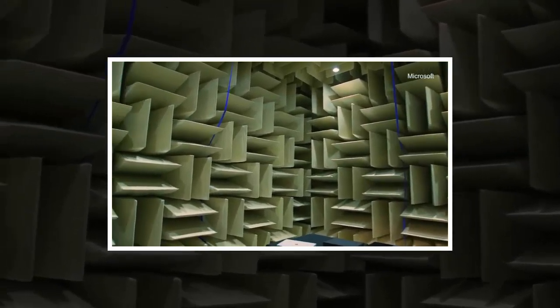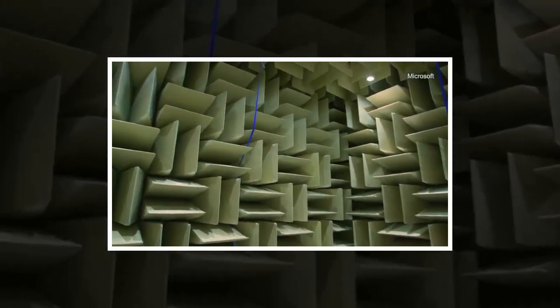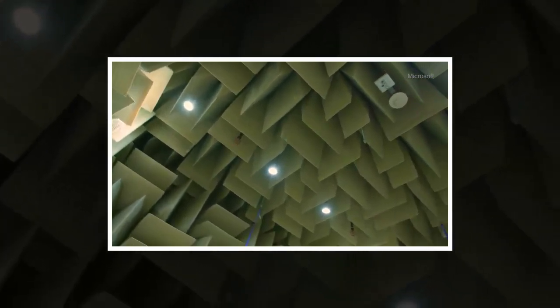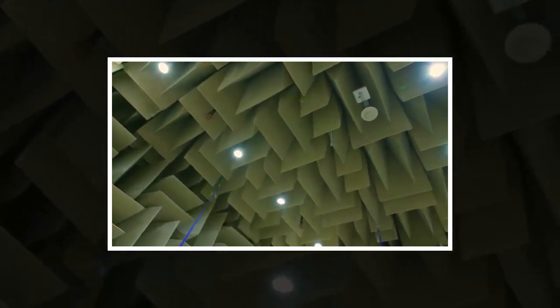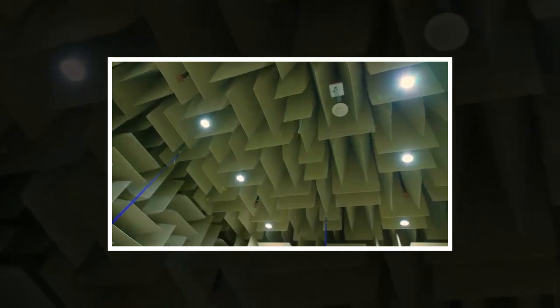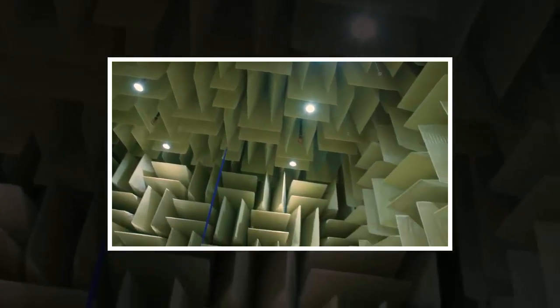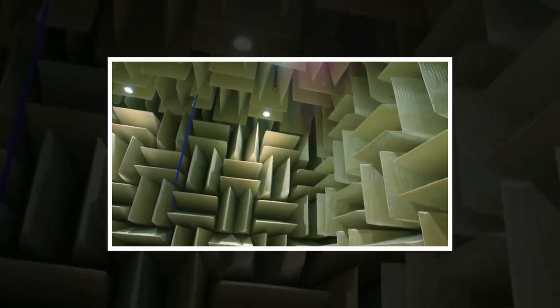The chamber floats on 68 vibration damping springs and is mounted on its own separate foundation slab to cut it off from the rest of the building. Inside the chamber, the floor is made from the same steel cables used to stop fighter jets as they land on aircraft carriers, arranged like a net above the foam wedges underneath.